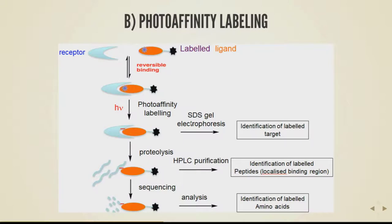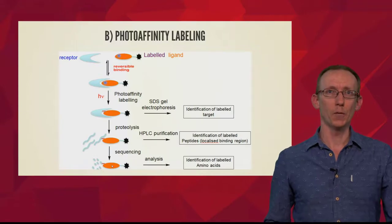We could use SDS gel electrophoresis to identify the labeled target, or break up the target protein through proteolysis to get peptide sequences, then do HPLC purification and identify the labeled peptides — since some peptides will now have a different molecular weight due to the attached natural product or lead compound plus handle. We can even break them down further to individual amino acids and identify labeled amino acids through techniques like mass spectrometry.